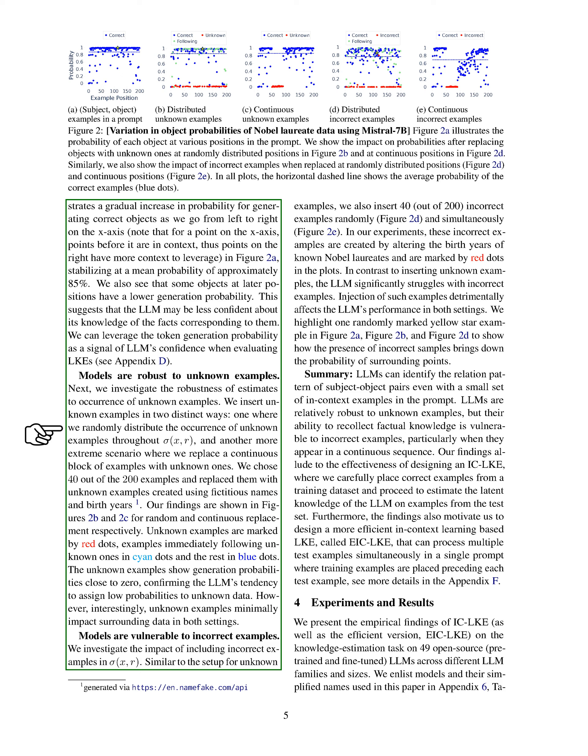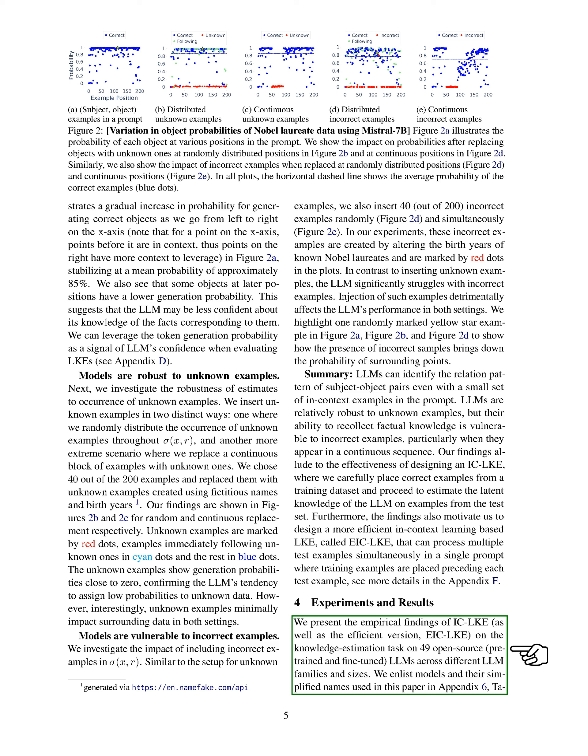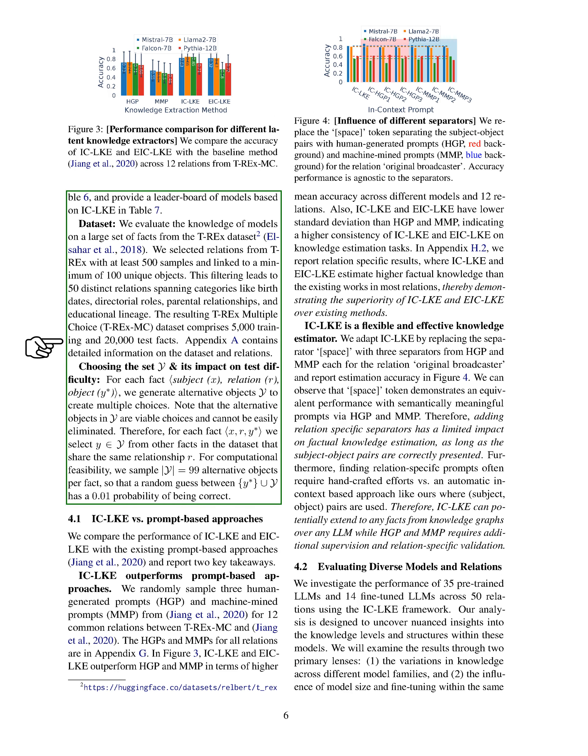In this section, we present the results of our experiments on the knowledge estimation task using IC-ELC and its efficient version EIC-ELC on 49 open-source large language models. We assessed these models across various LLM families and sizes. For our dataset, we evaluated the models using a wide range of facts from the T-REX dataset, specifically choosing relations with at least 500 samples and linked to a minimum of 100 unique objects. This filtering resulted in 50 distinct relations covering categories such as birth dates, directorial roles, parental relationships, and educational lineage. The T-REX multiple-choice dataset we created consists of 5,000 training facts and 20,000 test facts.